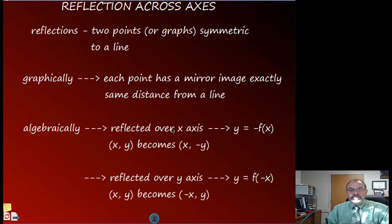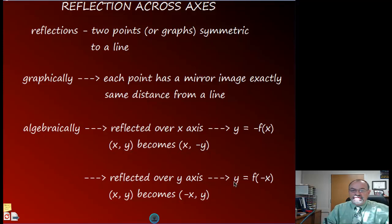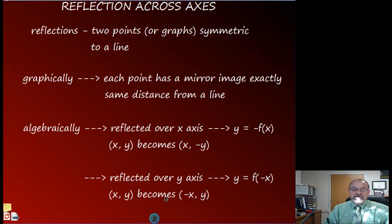Algebraically, if you reflect something over the x-axis, all the new y values are going to be the opposite of the original y values. So the ordered pair (x, y) becomes (x, -y). When you reflect over the y-axis, the new y values equal the value at negative x — so (x, y) becomes (-x, y). The y value stays the same but the x values are opposite.